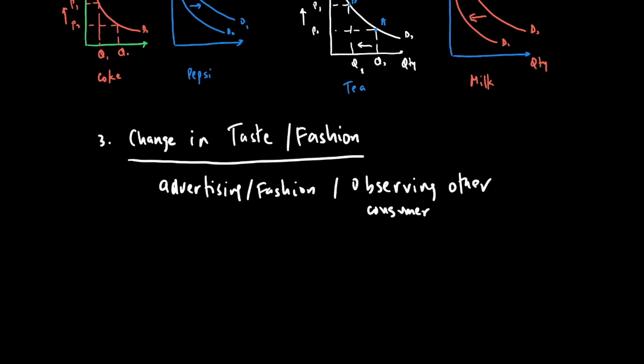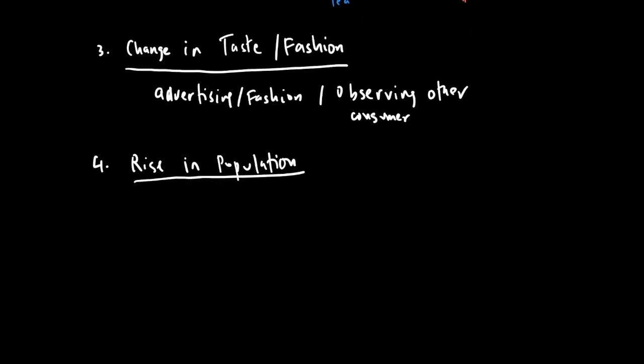The next factor is a rise in population. If there's a rise in young population, demand for goods consumed by young people will go up; if there's a rise in aging population, demand for goods consumed by older people will go up. Another factor is weather — in winter, demand for sweaters and heating may go up; in summer, demand for cold drinks, ice cream, and t-shirts may go up. So depending on the weather, demand for certain goods can change.